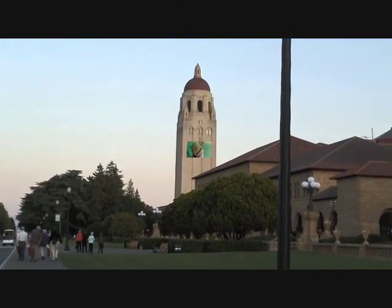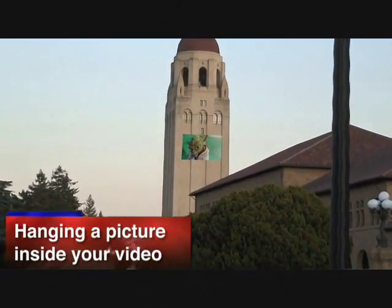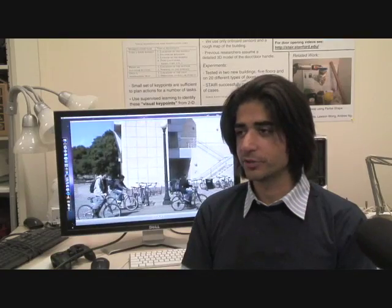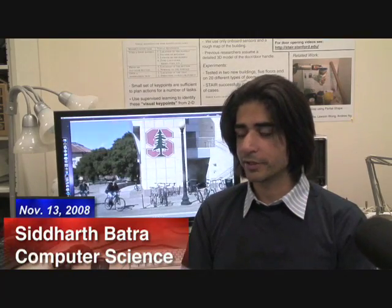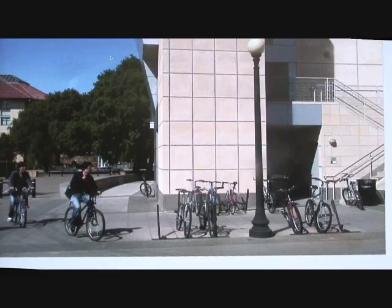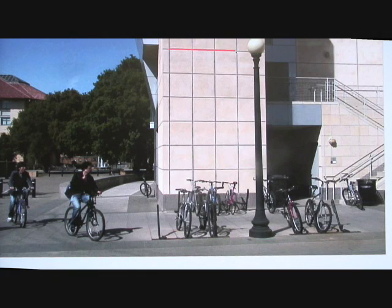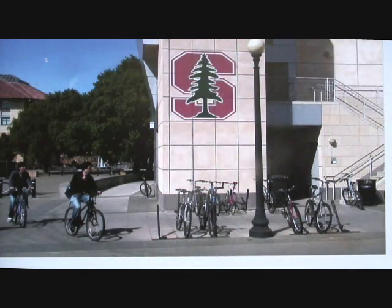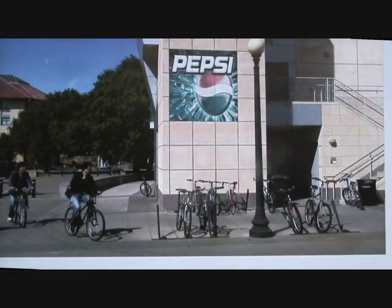Our technology empowers anyone with a video camera to very easily and automatically place pictures, videos, and advertisements within their home videos, and then they can upload them onto the web. Anybody with a home video, like the one in front of you, can within a few seconds and a couple of clicks of the mouse, select the surface they want to replace with their picture or advertisement, and upload this video to our website. After which, within a few minutes of processing, they can see a variety of ads on that content.